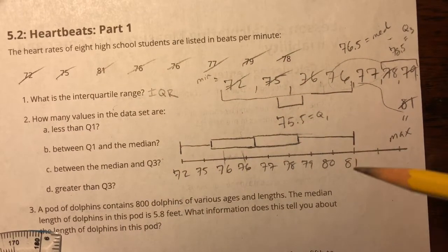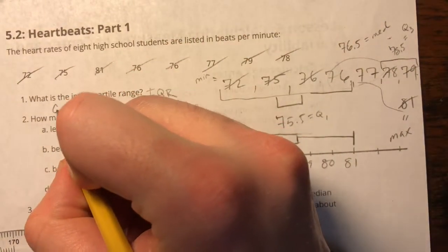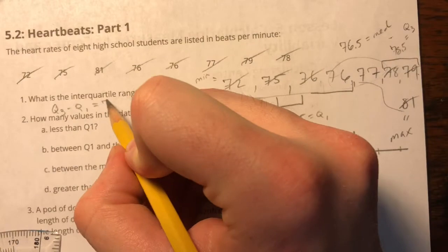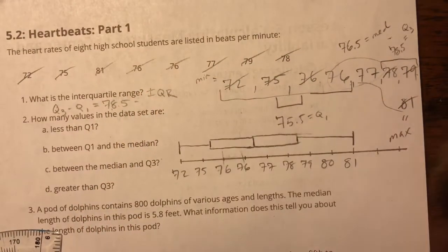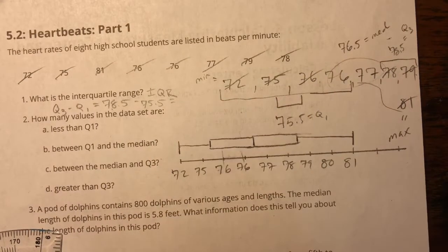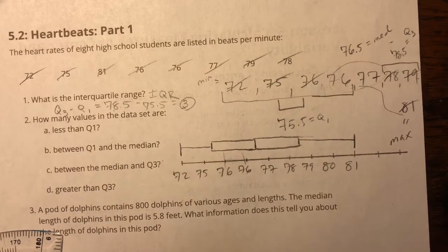What is the interquartile range? Well, that's between Q1 and Q3. So what I can do for IQR is just subtract, find the difference. So Q3 is 78.5 minus Q1 is 75.5. And between my two quartiles, there's a difference of three. So that's the IQR.